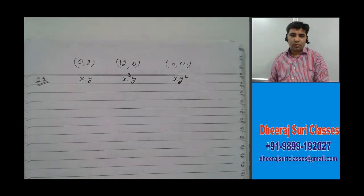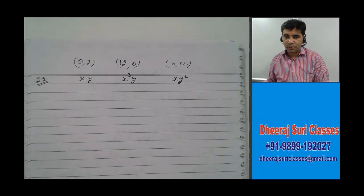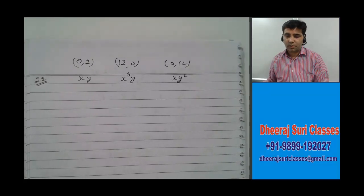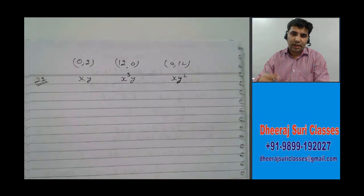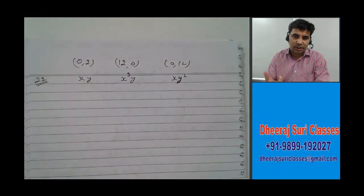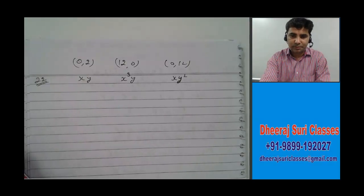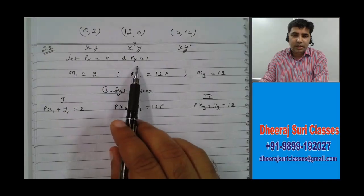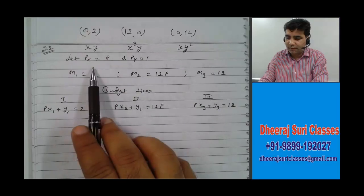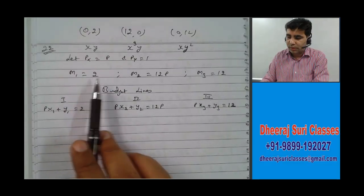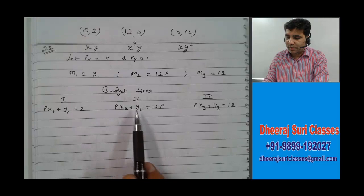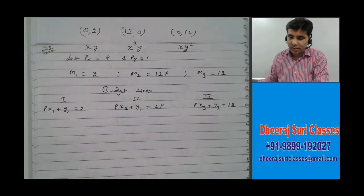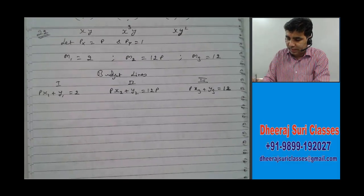Now for question number 22, almost all the information is the same as question 21 except the endowments have changed. Agent 1 has endowments (0, 2), agent 2 has endowments (12, 0), and agent 3 has endowments (0, 12). Again Py is 1 and Px is P. Income of agent 1 is 2, agent 2 is 12P, and agent 3 is 12. The budget lines are Px·x1 + y1 = 2, Px·x2 + y2 = 12P, and Px·x3 + y3 = 12.